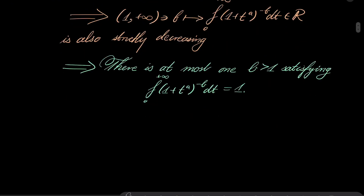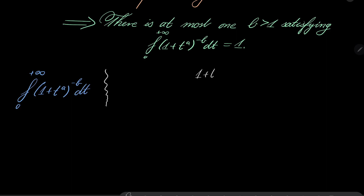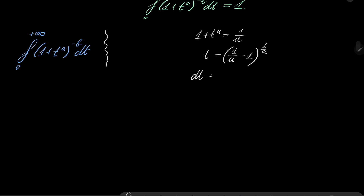How to find this number? That's the crux of our problem. I will do the following substitution: put 1 plus t to the power of a equal to 1 over u. Then t equals (1 over u minus 1) to the power 1 over a, and dt equals (1 over a) times (1 over u minus 1) to the power (1 over a minus 1) times (minus 1 over u squared) du. Since t goes from 0 to infinity, when t goes to 0, u equals 1; and when t goes to infinity, u goes to 0.